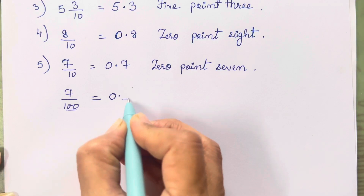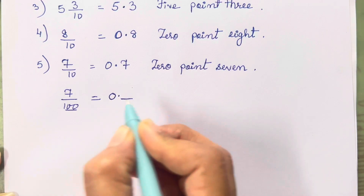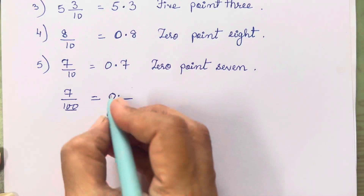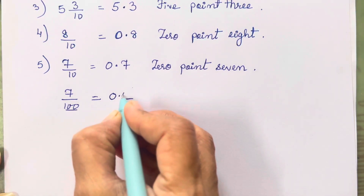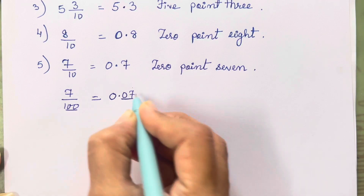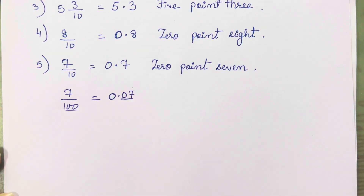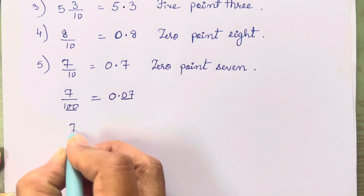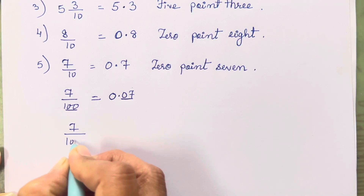We need two digits after the decimal point, but we only have one digit which is 7. So I will write 07 — giving us 0.07. The same applies for 1000.